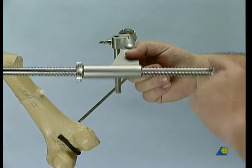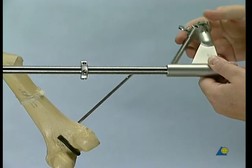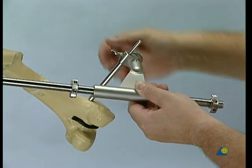In order to slide the holding sleeve over the distal shunt screw, all the joints of the distractor have to be loosened. The position is secured by the wing screw.